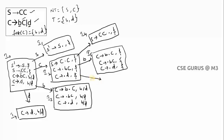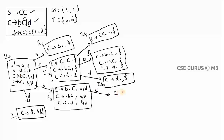From I2, scan d: C → d•, $. Lookahead is $. Compare with I3's d-production which had lookahead b|d — different lookaheads, so this is a new item, I6. Now from I3, scan C: C → bC•, b|d. No symbol after dot, so this production as-is. Compare with I4 — I4 has S → CC•, $ while this has C → bC•, b|d. Different, so this is I7.